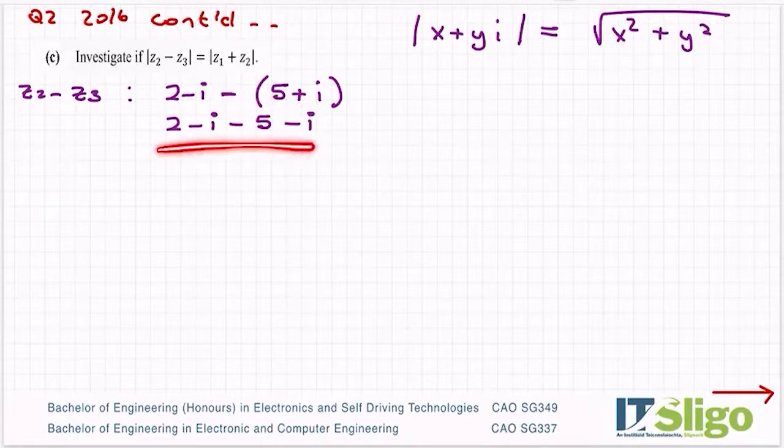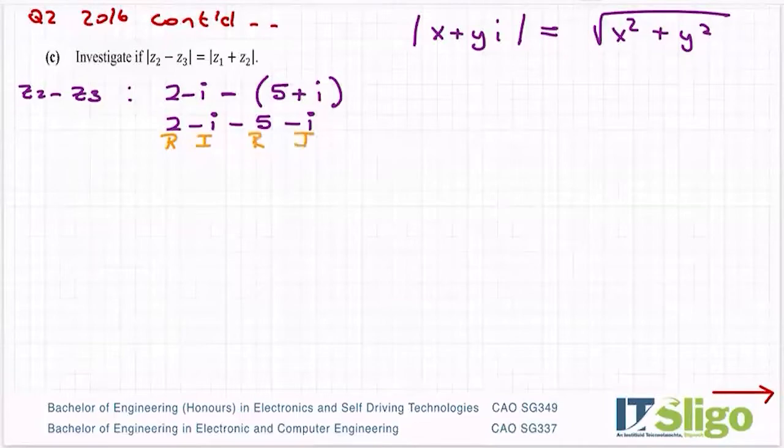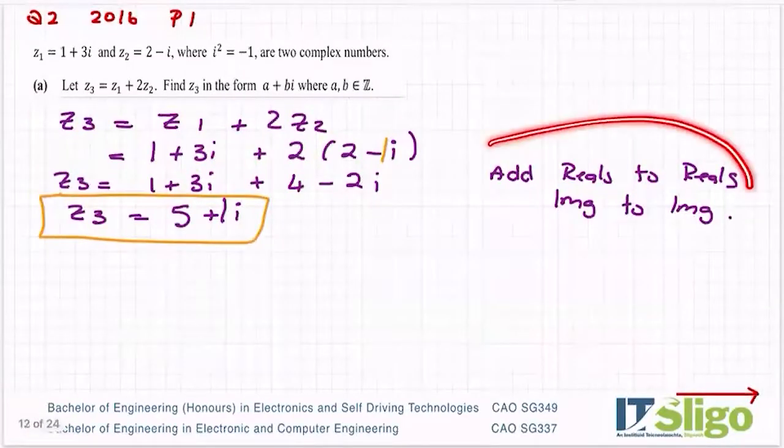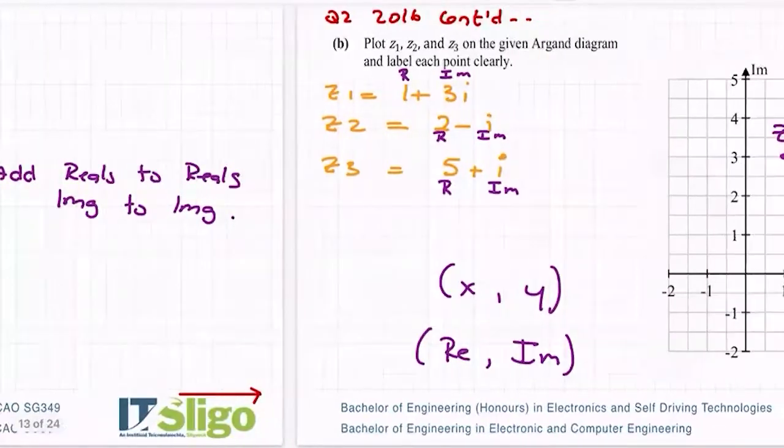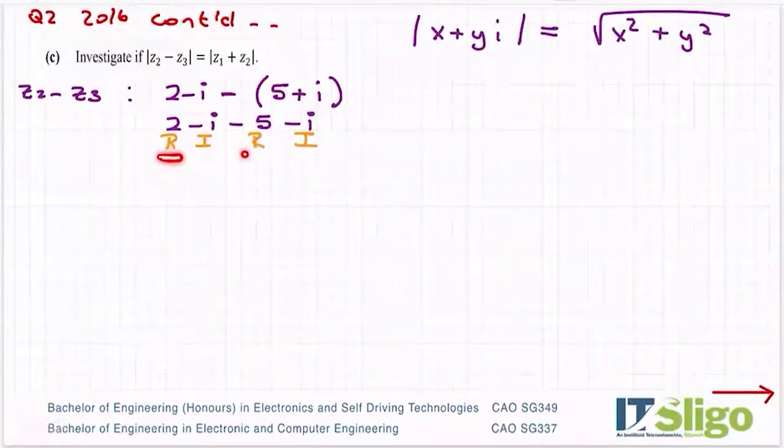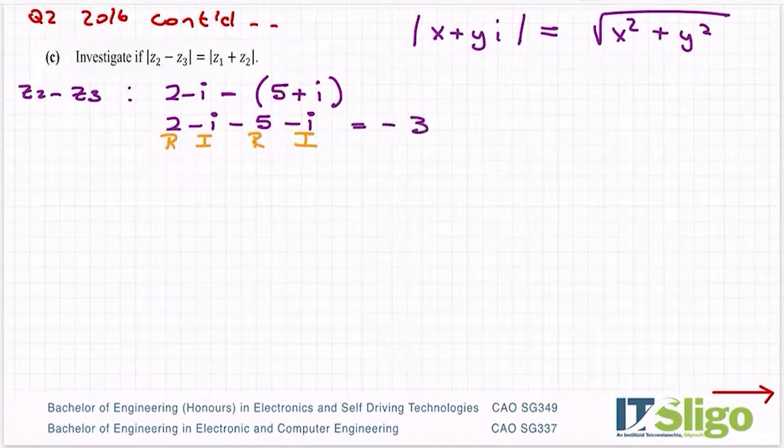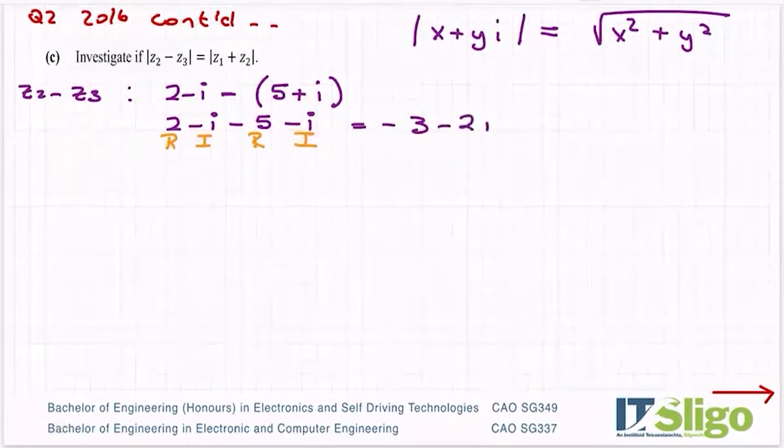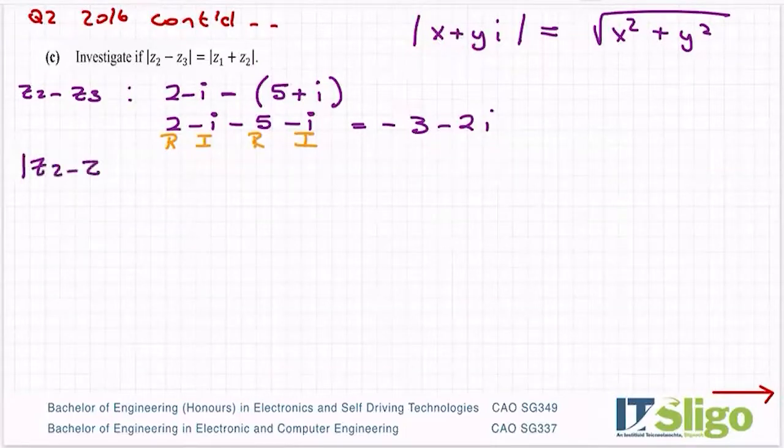I have to tidy it up because that's not in the form x plus yi. That's a real part, that's an imaginary part, a real part, an imaginary part. Remember what we said in the first part: reals to reals, imaginaries to imaginaries. So I'm going to go 2 minus 5 is minus 3 and then I have minus 1i minus 1i to give me minus 2i. So that now is in the form x plus yi, that's my x part and that's my y part.